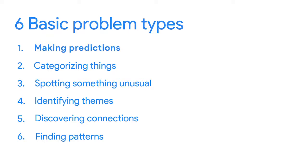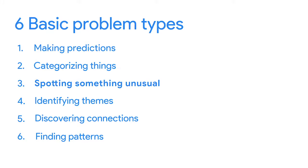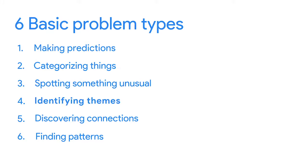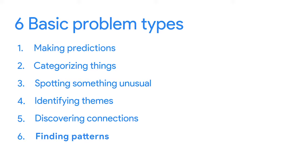Data analysts work with six basic problem types: making predictions, categorizing things, spotting something unusual, identifying themes, discovering connections, and finding patterns. Think back to the real-world example from the previous video — Anywhere Gaming Repair wanted to figure out how to bring in new customers.